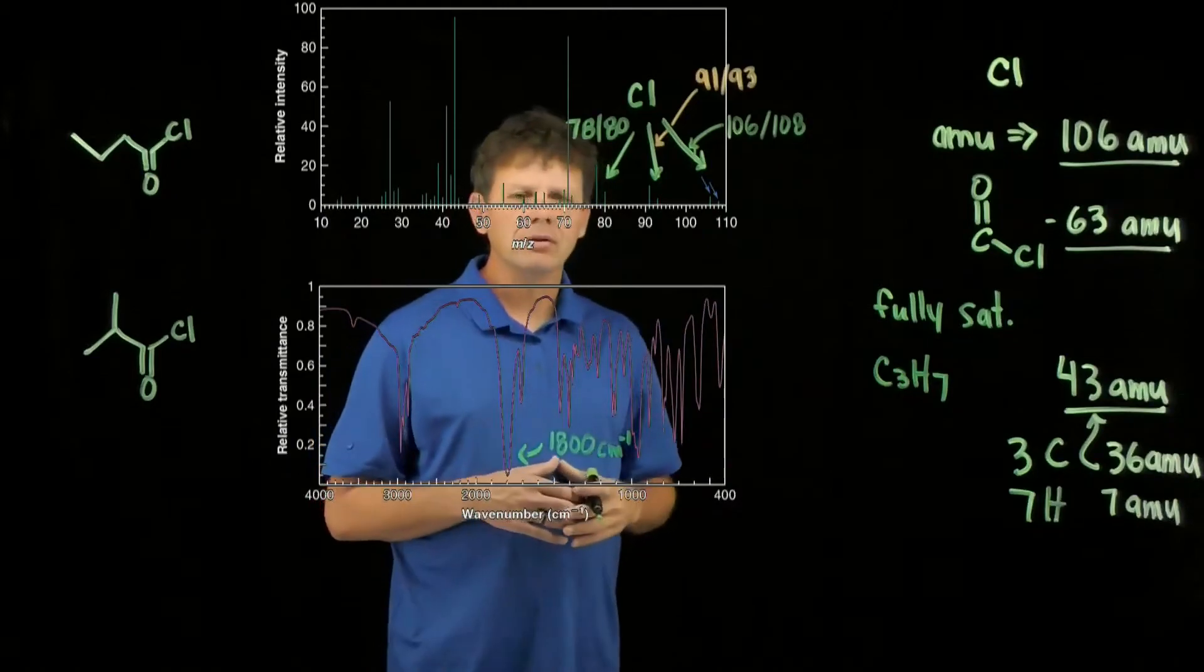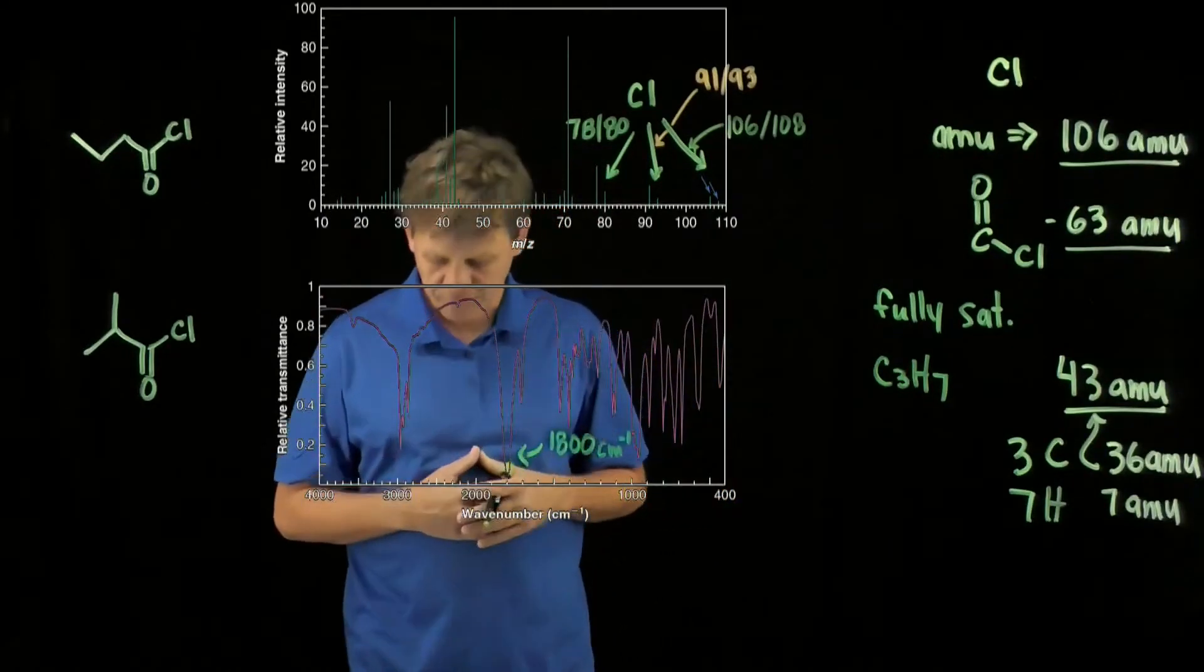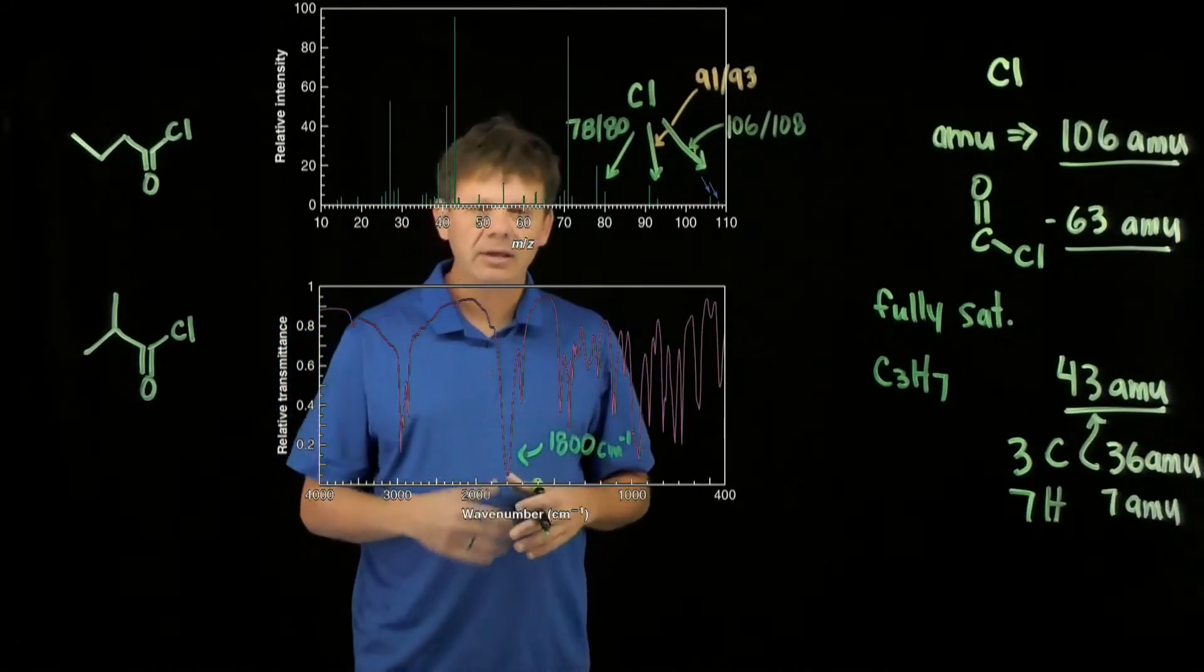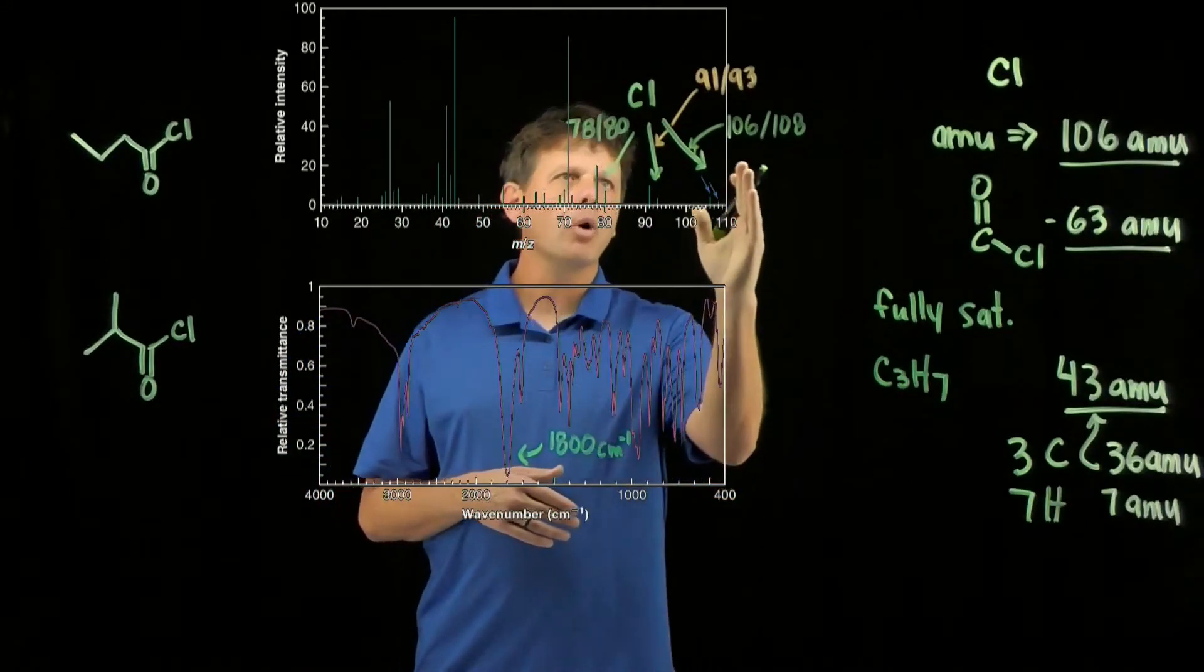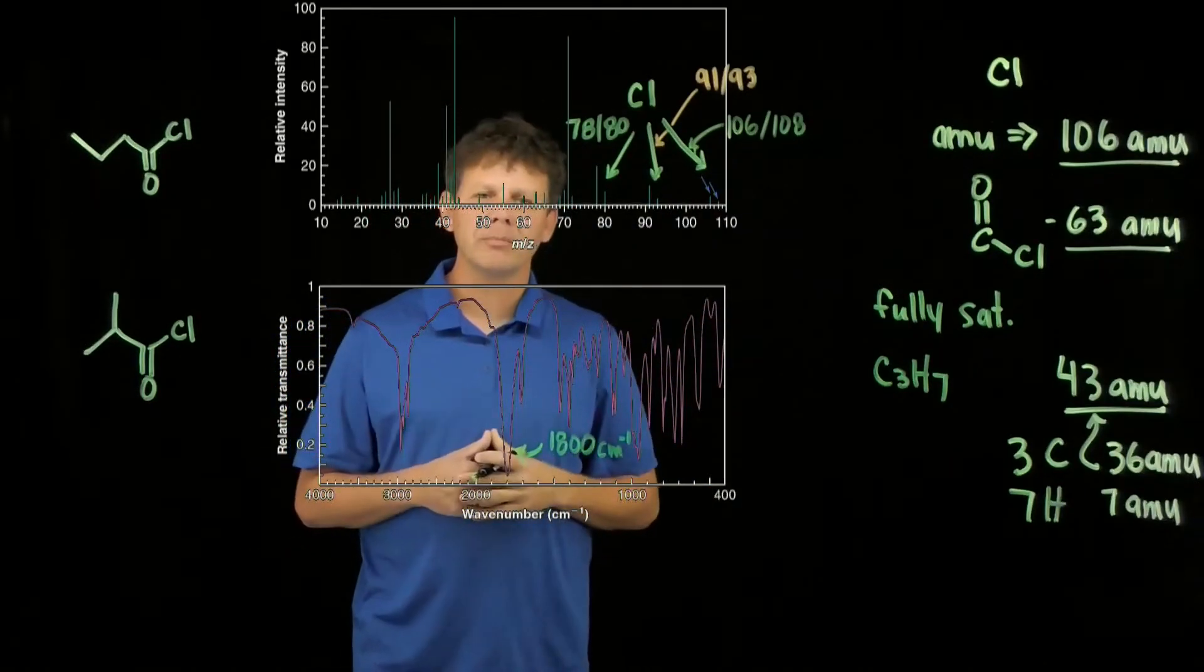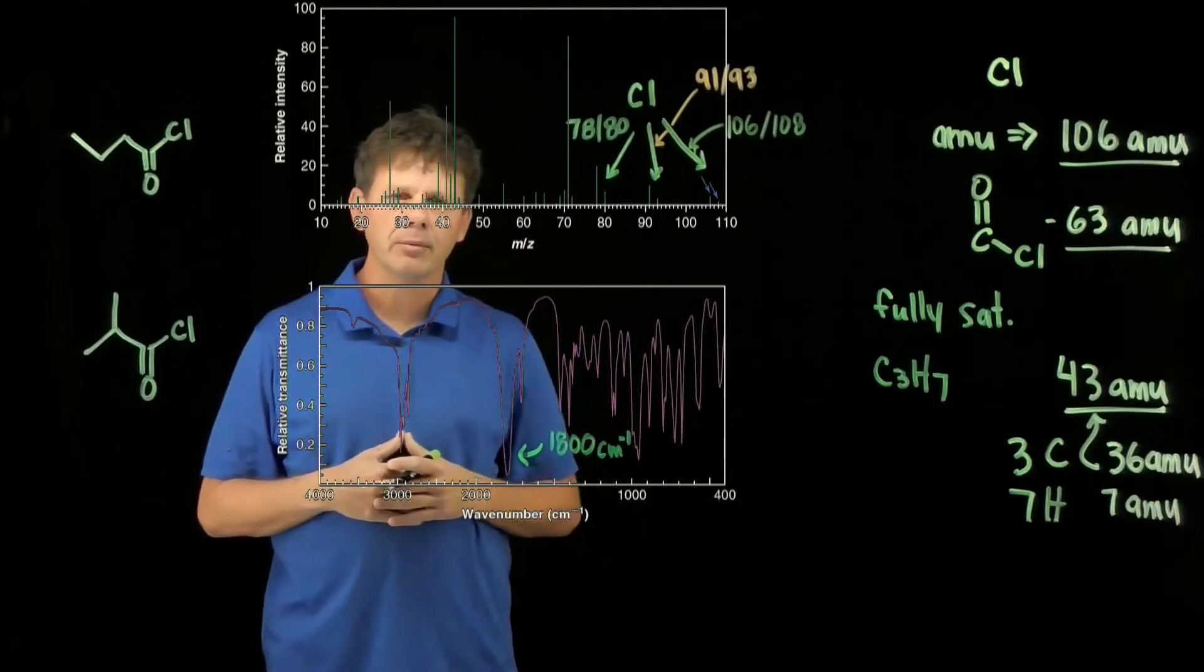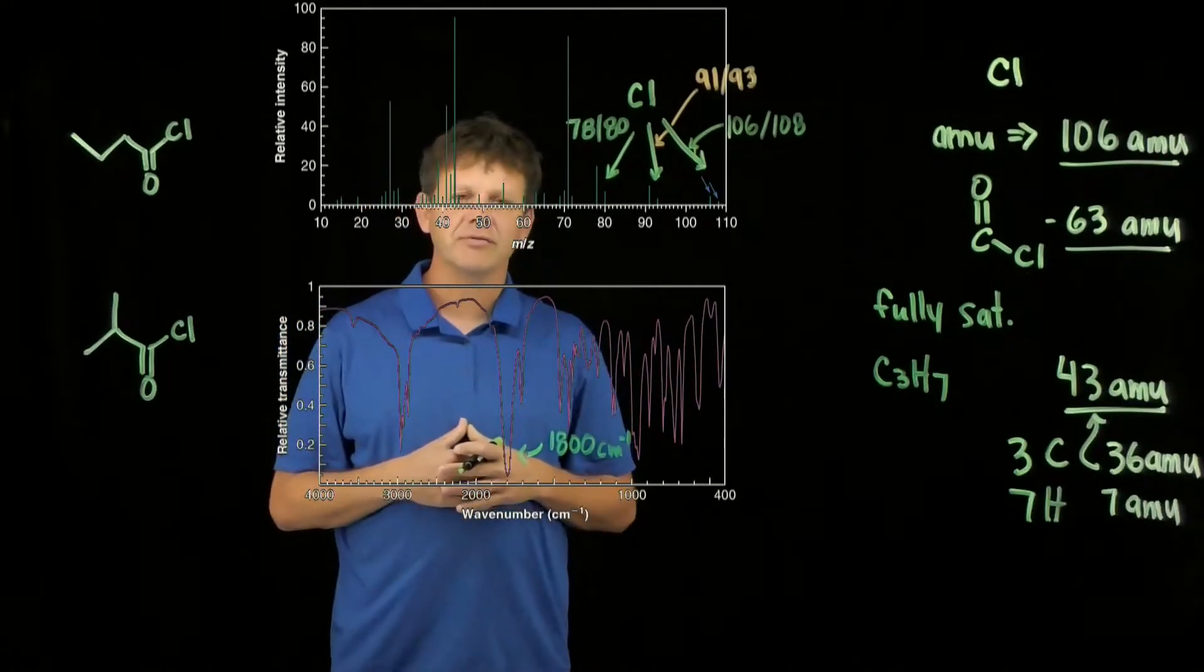For that we have to look more closely at the mass spectrum, specifically the fragmentations. If you look at the mass spec, we go from 106 to 91, that's a loss of 15. So we know that we're going to lose a methyl group, but both of these have a methyl group that we could potentially lose.